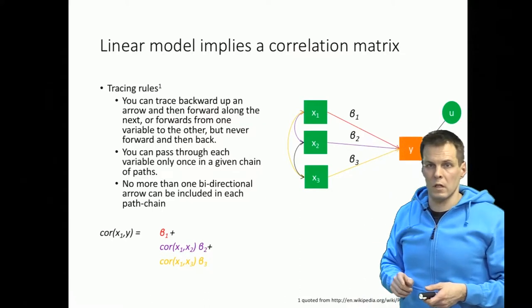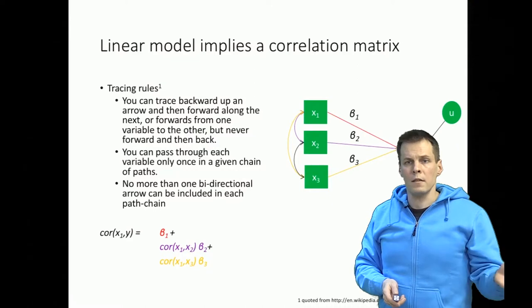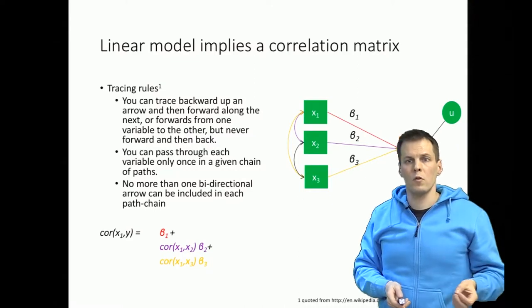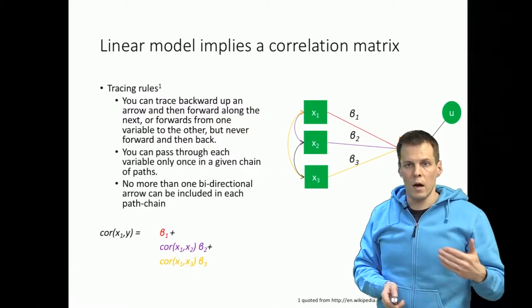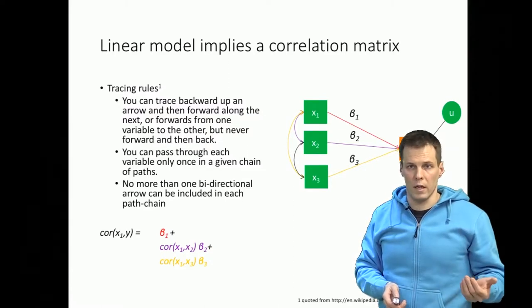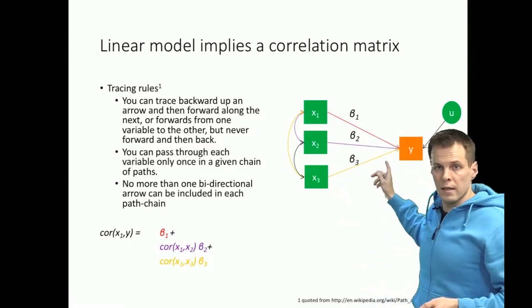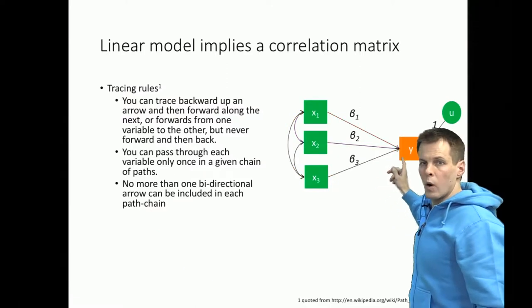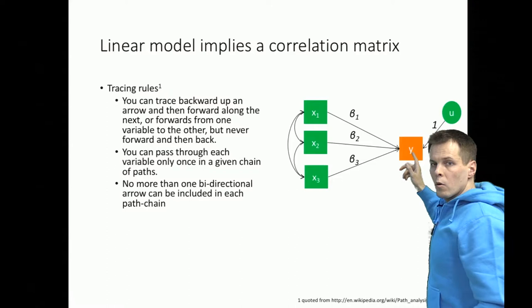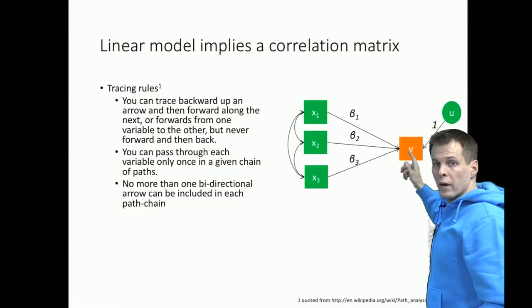The importance of this tracing rule will be made clear in a few slides. That gives us the correlations, but we also need the variances of variables — those are implied by the model as well. Working on a correlation metric means the variance is one, but that one is something the model implies. When we compute the variance of y, we think about how many different ways we can go from y to somewhere and come back — including to the error term.